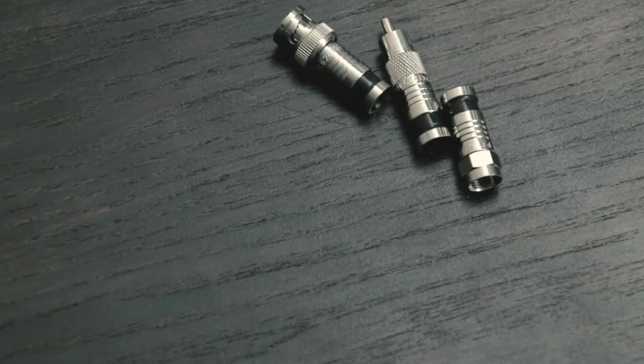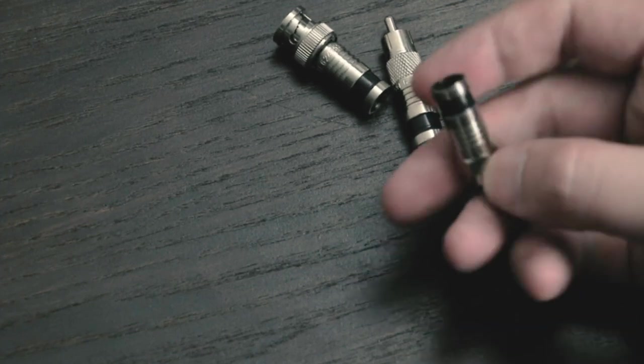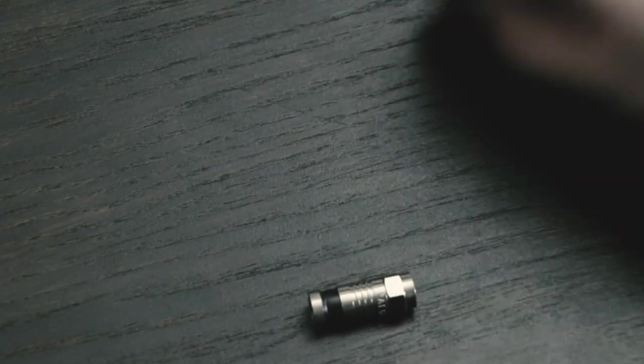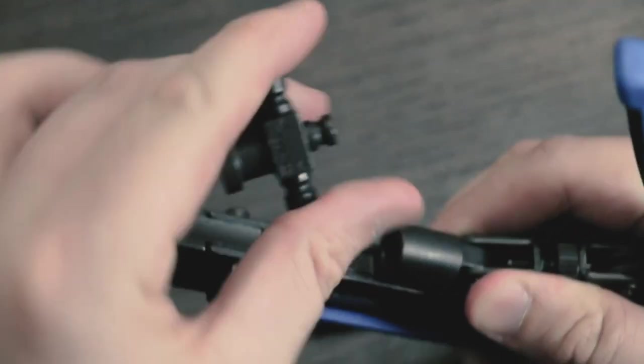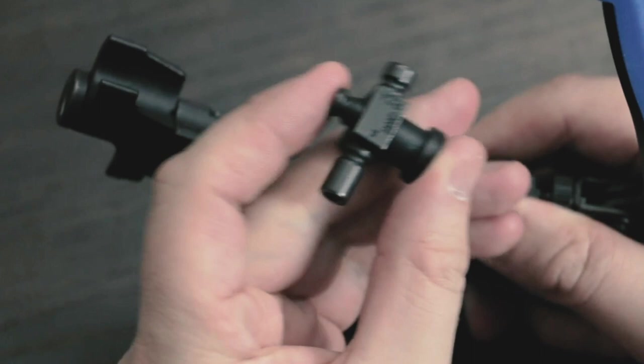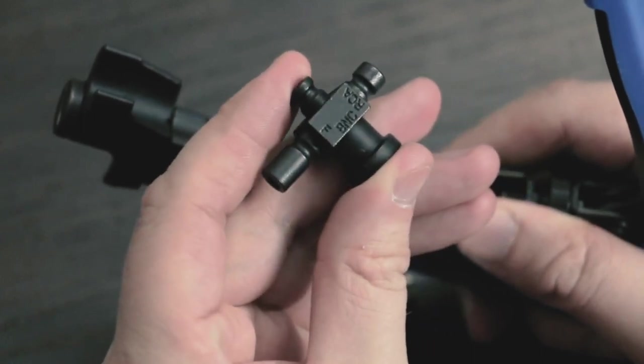To use this tool, select the type of connector you're going to use. Remove and rotate the crimp die or plunger and insert it back in with the corresponding connector type facing out.